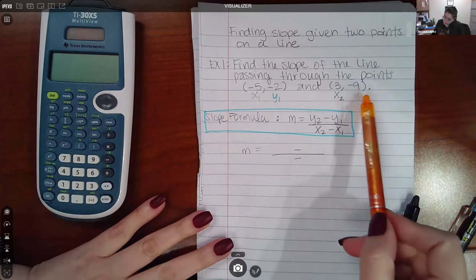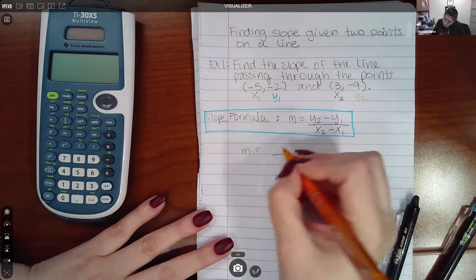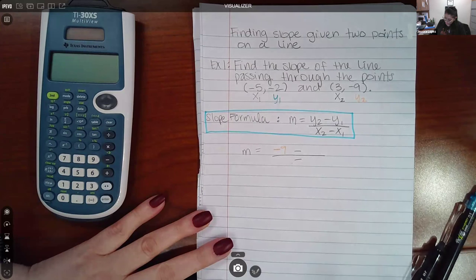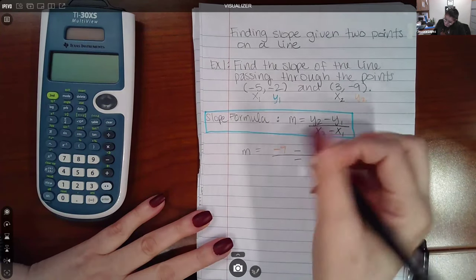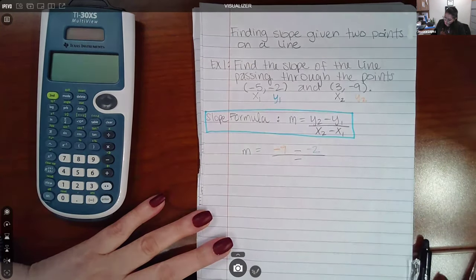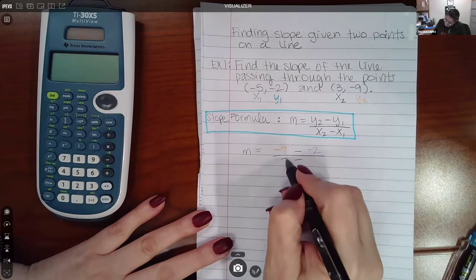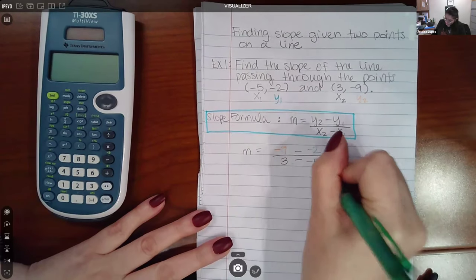For instance, y2 is the second Y coordinate, which is negative nine. y1 is the second coordinate of the first point, which is negative two. Then x2, which is three, and then x1, which is negative five.